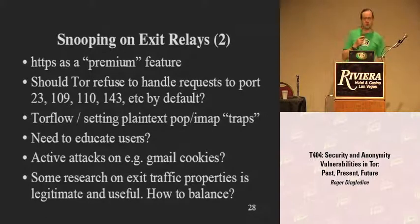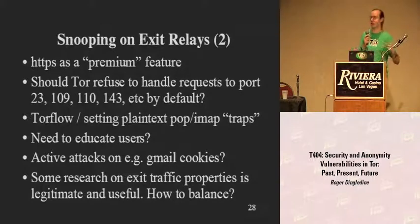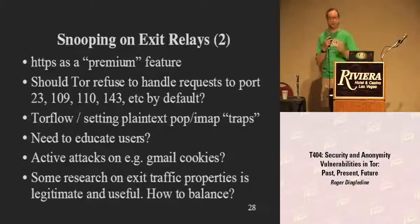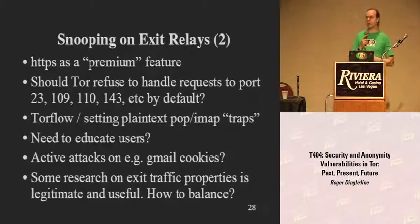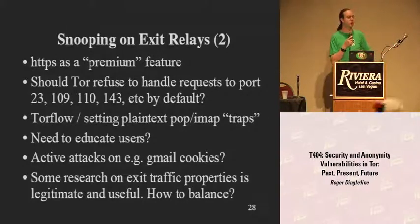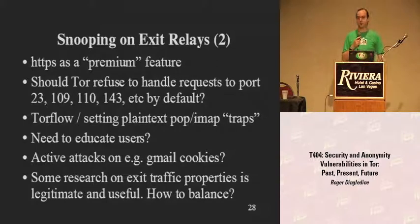There are a couple of things we could do: make Tor warn you when making a connection to port 109 — probably you're about to send a POP username and password — or block the connection. That might work for POP or IMAP, but what do we do for port 80? Firefox has a little pop-up saying you're sending stuff unencrypted — but every one of us has learned to just click through it. The Internet is not encrypted, so what are you going to do?